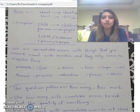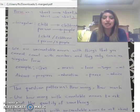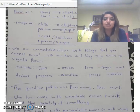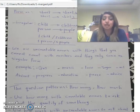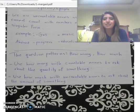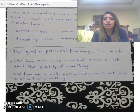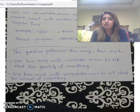Okay, so let's continue. We were talking about the word 'advice' — we can't say 'advices', we have to say 'a piece of advice' or 'some advice' because it's uncountable. So what's new about countable and uncountable nouns? Let's see the question patterns: 'how many' and 'how much'.